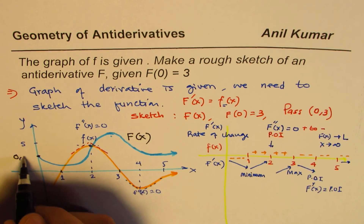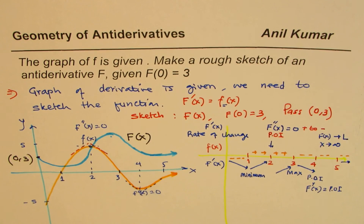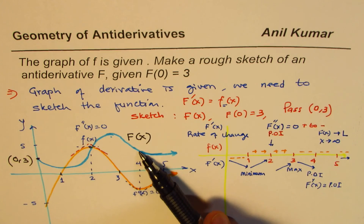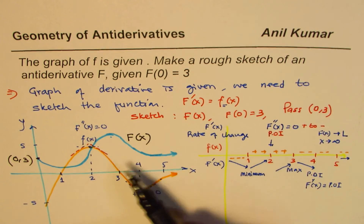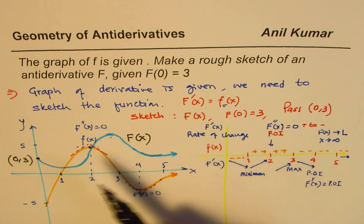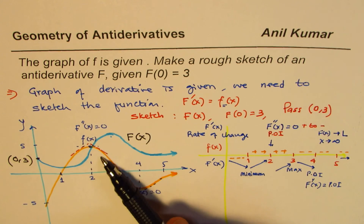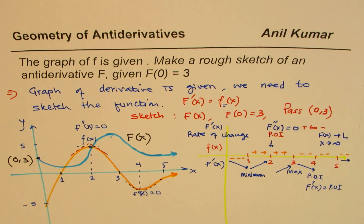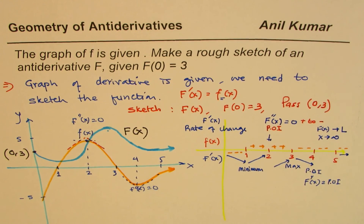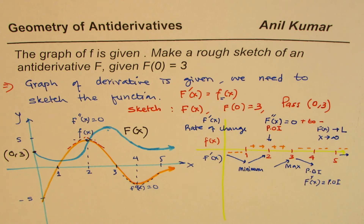This becomes the graph of F, starting at (0, 3). I hope this helps you understand how to sketch the graph of an anti-derivative. The derivative graph gives you the function — it's the same step: function, anti-derivative, derivative, function. I'm Anil Kumar; I'll take a few more videos on this for practice. Feel free to share, subscribe, post questions, and leave likes. Thank you and all the best.